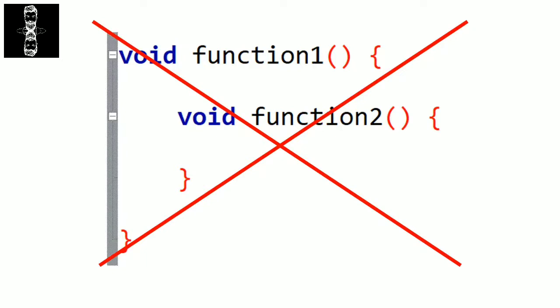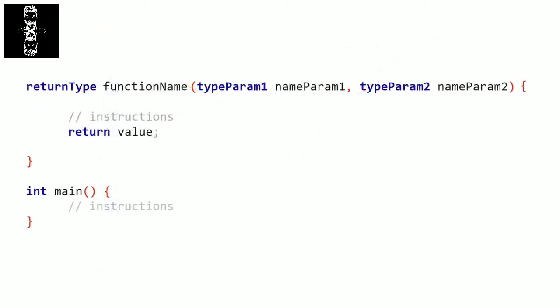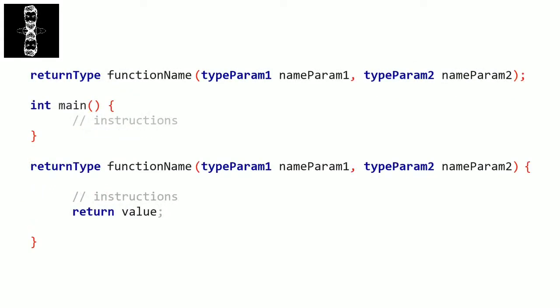You have two choices when creating a function. You can put it before the main function in the program. Or if you want to put it after the main function, you have to declare it before the main by using a prototype. The prototype contains the return type, the function name, the parameters, and a semicolon at the end — don't forget the semicolon. So we put the prototype before the main, then the main, then the full function definition after it.